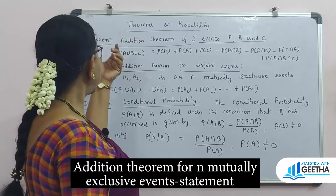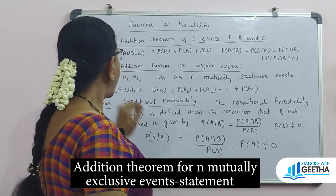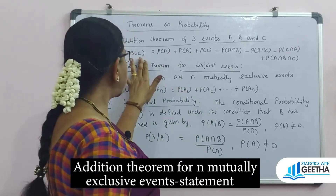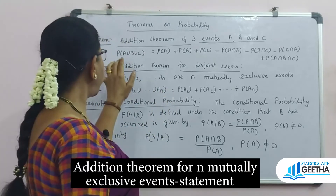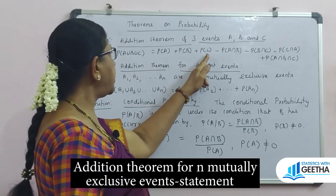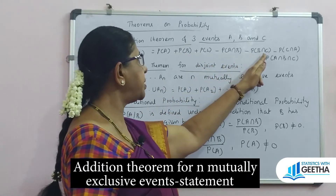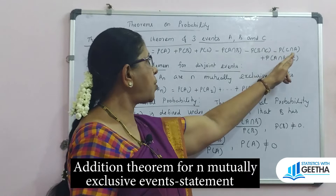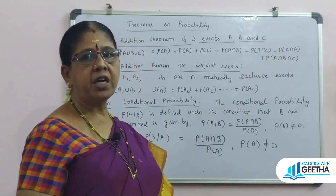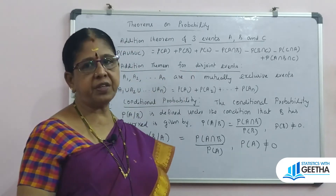The statement of the addition theorem for three events A, B, C: the extension gives probability of A union B union C equal to P(A) plus P(B) plus P(C) minus P(A intersection B) minus P(B intersection C) minus P(C intersection A) plus P(A intersection B intersection C).